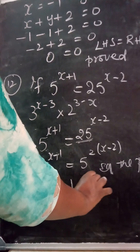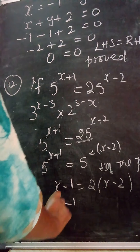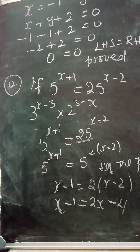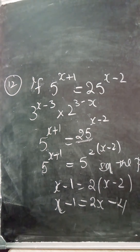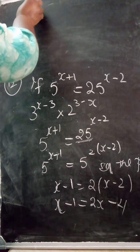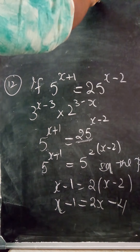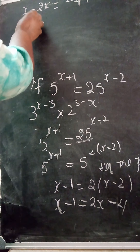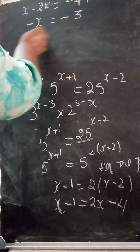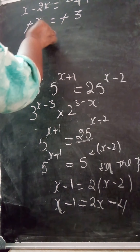Equating powers: x + 1 = 2(x - 2), which gives x + 1 = 2x - 4. Bringing 2x to the left: x - 2x = -4 - 1, so -x = -3. Since both sides are negative, cancel to get x = 3.